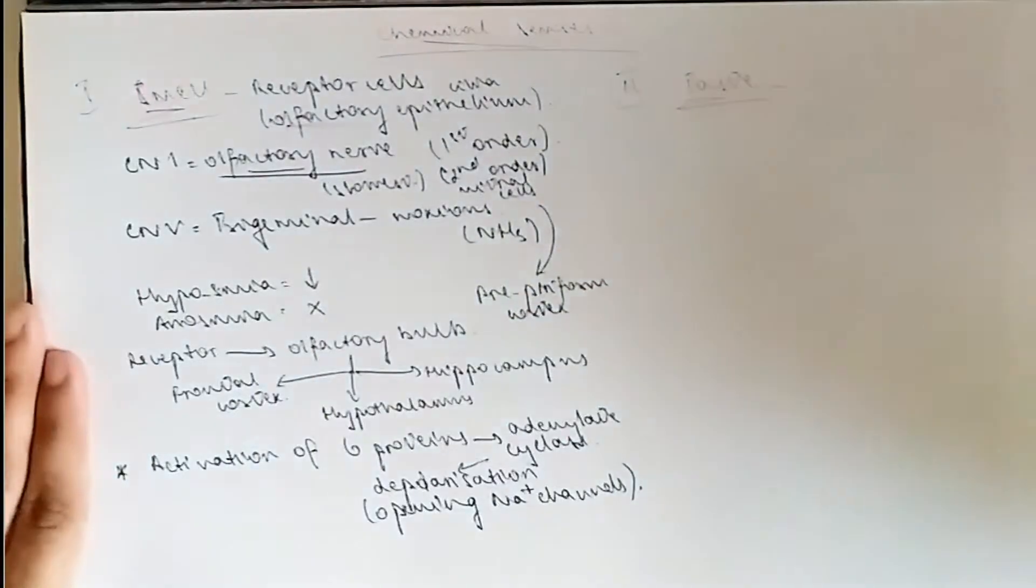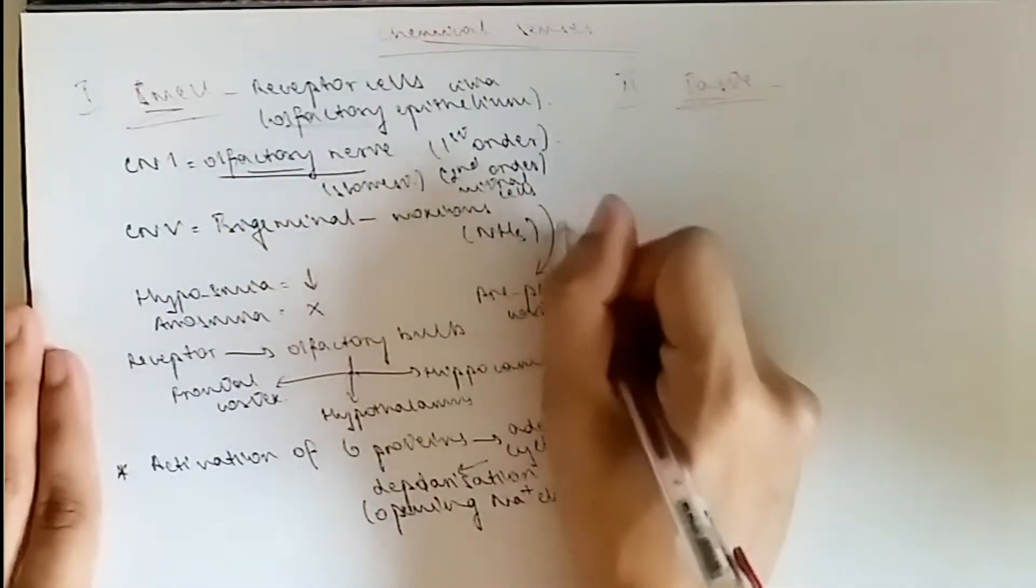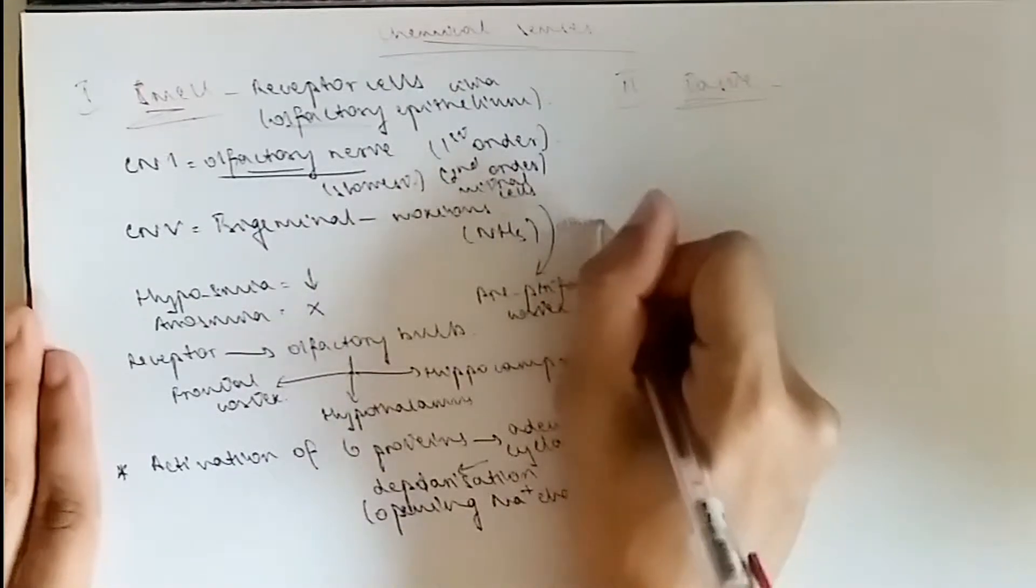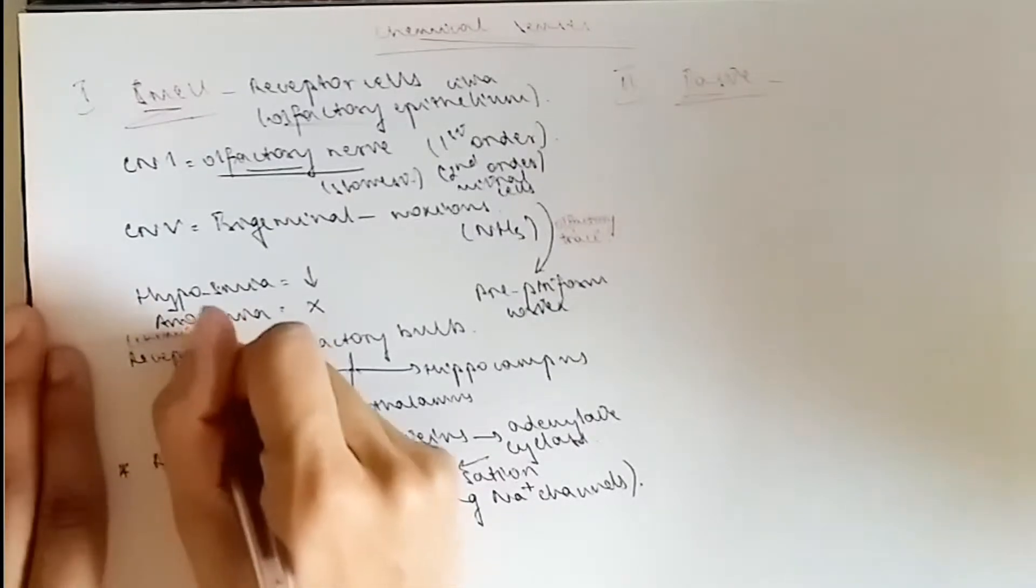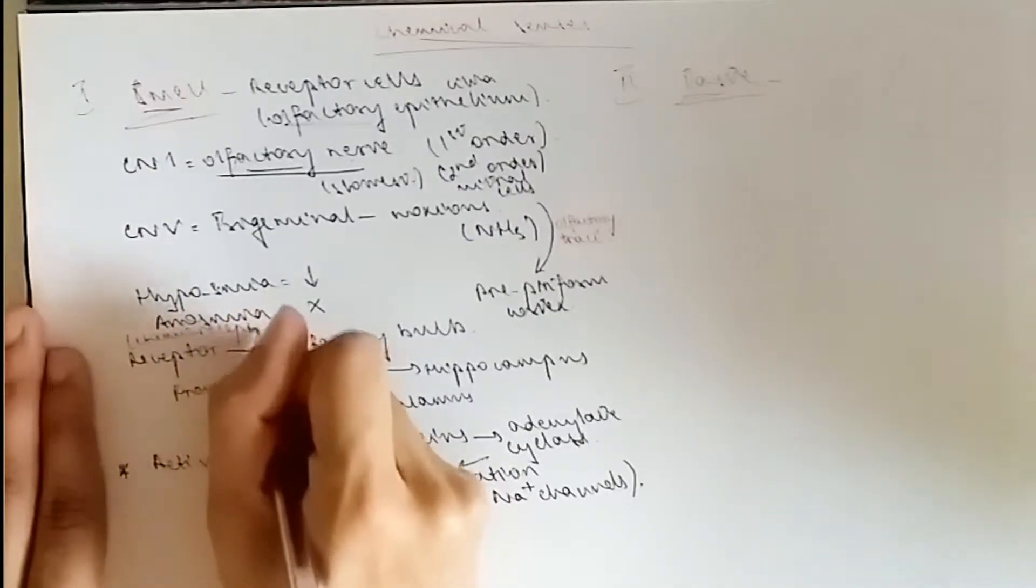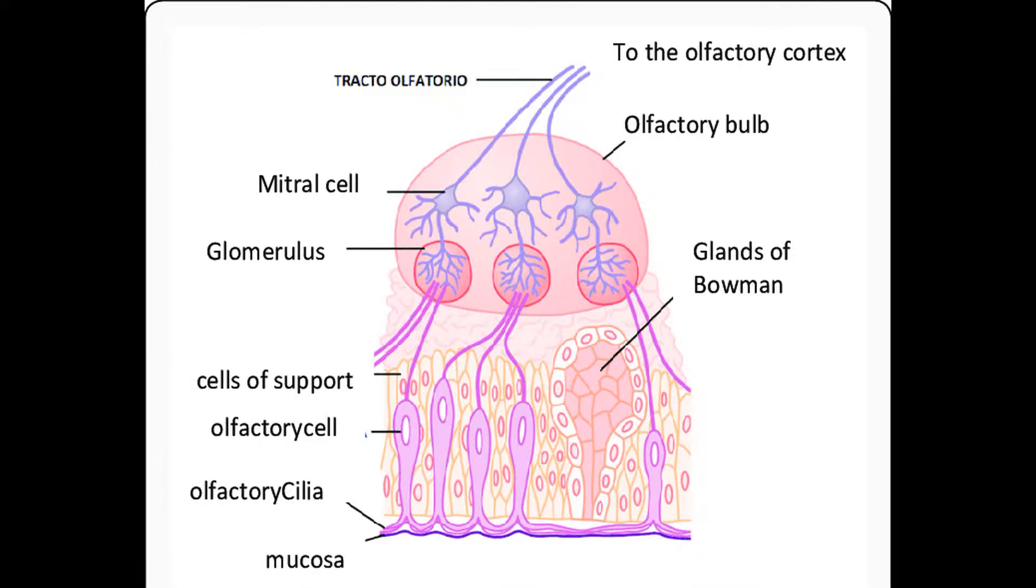This tract is called the olfactory tract. So we go from the olfactory receptors to the olfactory nerve to the olfactory tract, and then we go to the three different places that we spoke about: the hippocampus, the hypothalamus, and the frontal cortex. Just going to write everything down. The picture, you can see the olfactory cilia, the olfactory cells, and the mitral cells to the olfactory bulb, then the tract, and then the olfactory cortex.